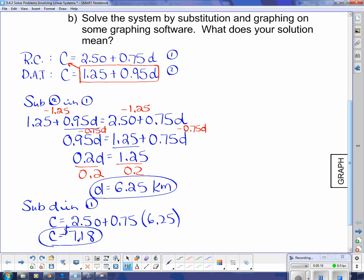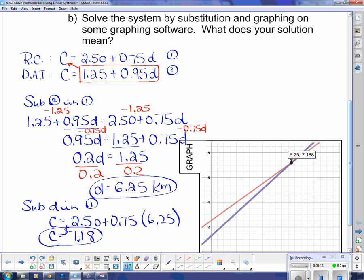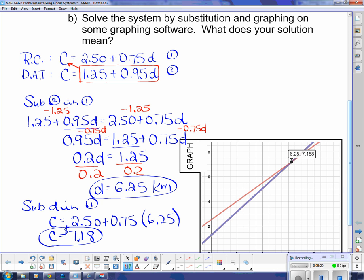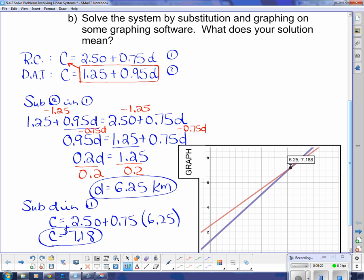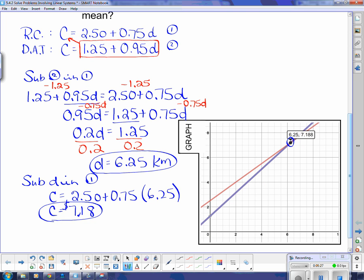So let's take a look at the graph, and I'll show you how to get this on Desmos, but we'll just have a quick look at the graph that I graphed earlier. Here's the intersection point, and that's where the cost is the same. And the kilometers are the same. So if I were going 6.25 kilometers, it doesn't matter which taxi cab company I choose, it's going to cost me the same amount of money.